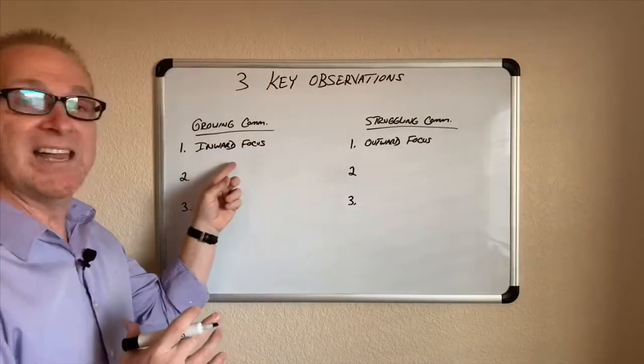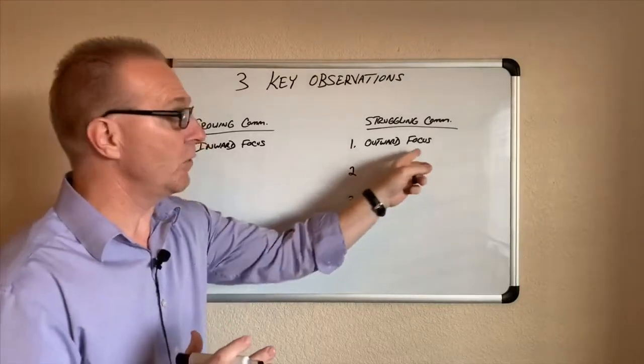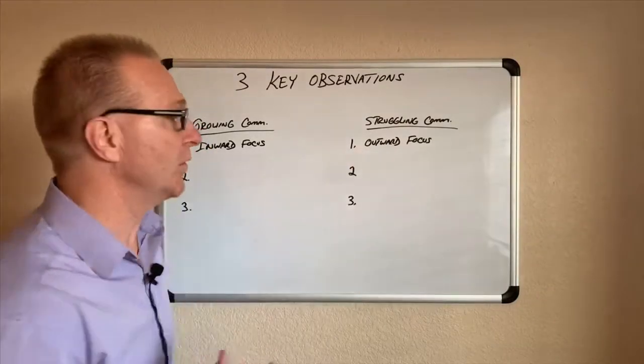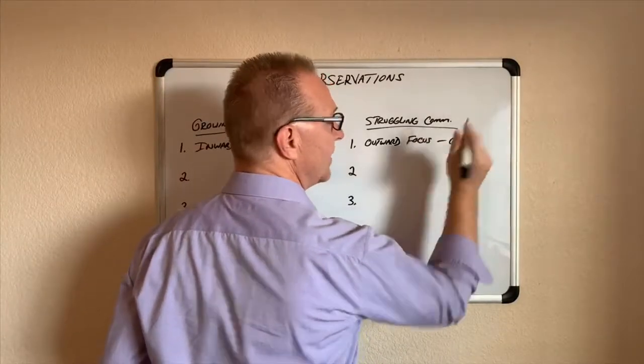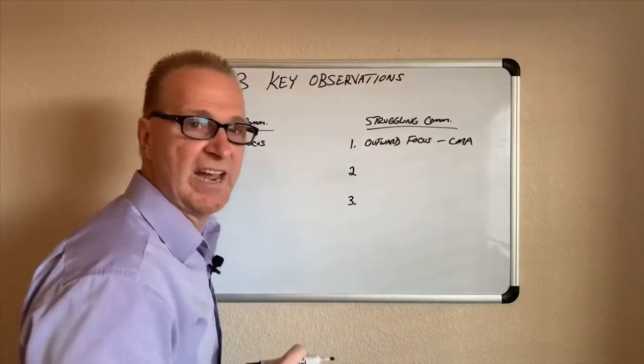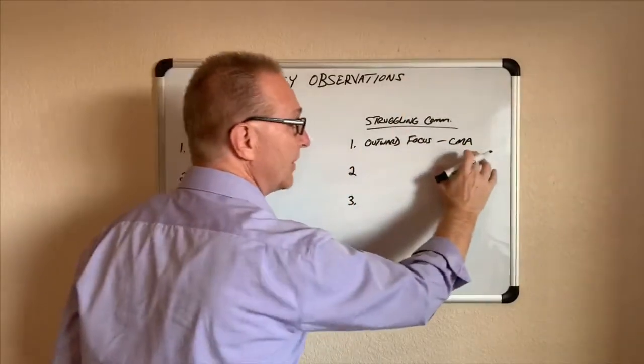That is the sign of a growing community is an inward focus. A struggling community is an outward focus. What they focus in on is what's called CMAs, kind of a comparative market analysis. They'll go and compare their community with the community down the street.